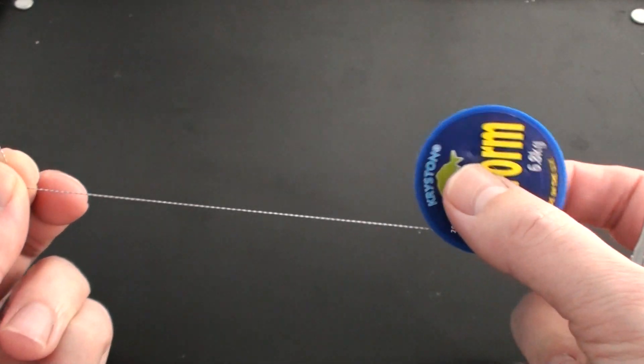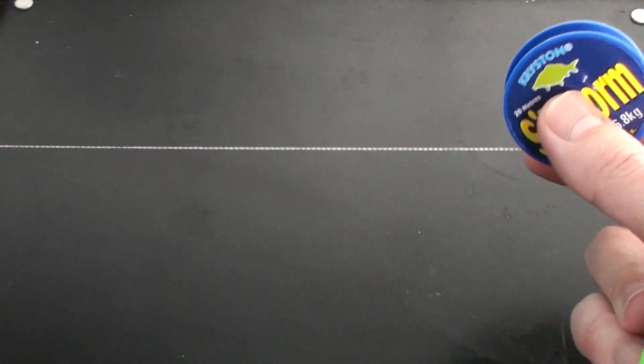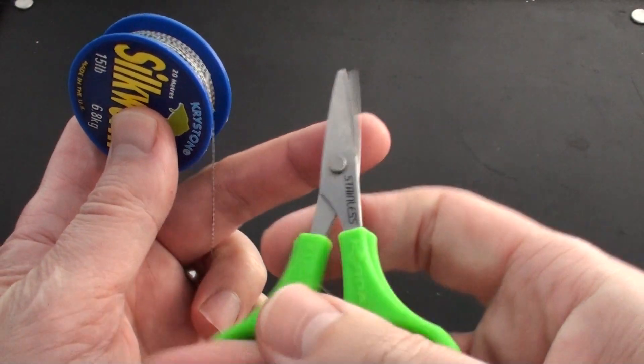So if we start off by simply taking about 12 inches of the silkworm material, use the scissors to make a cut.